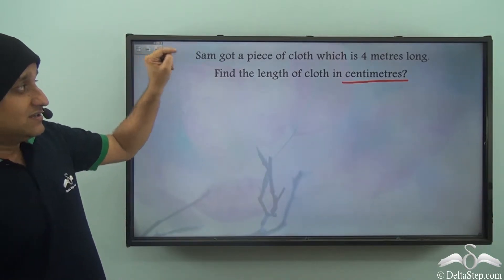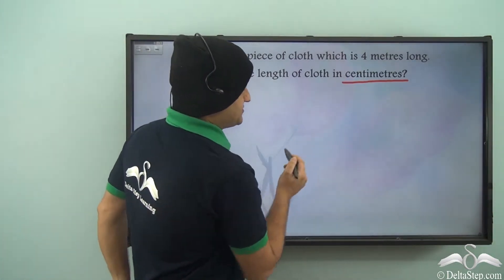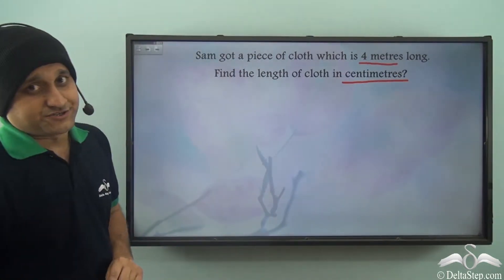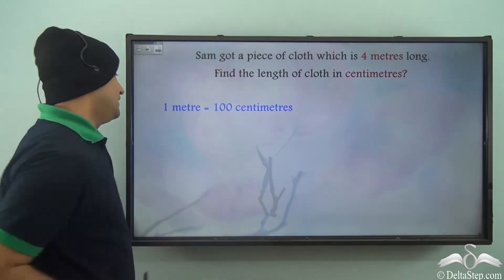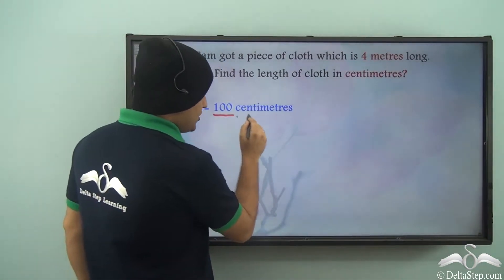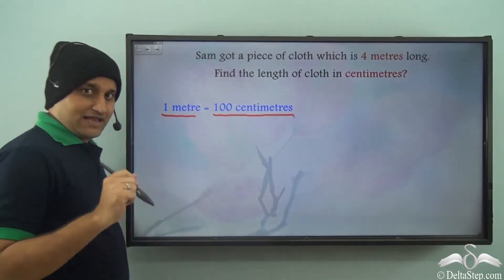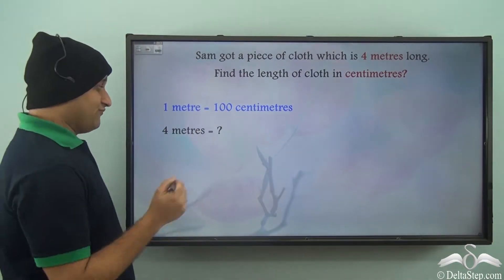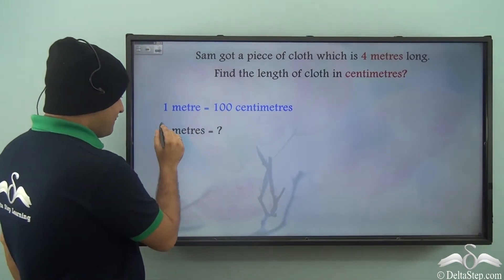We need to find the length of cloth in centimeters, and the length given is in meters, that is 4 meters. Now we know that 1 meter is equal to 100 centimeters.